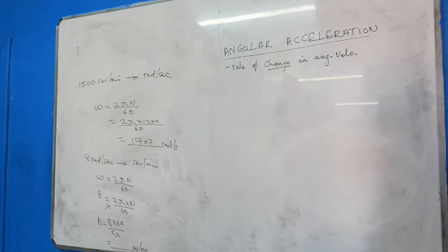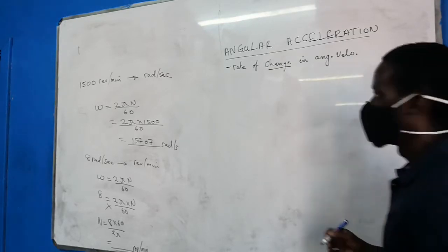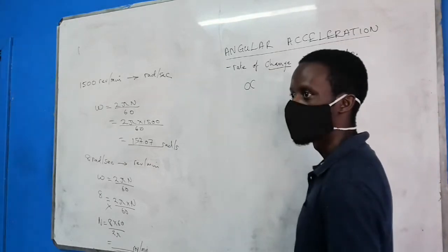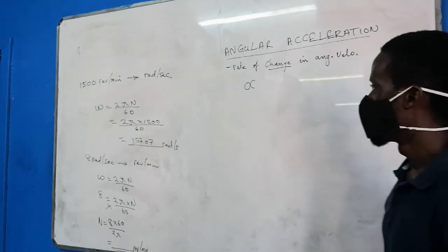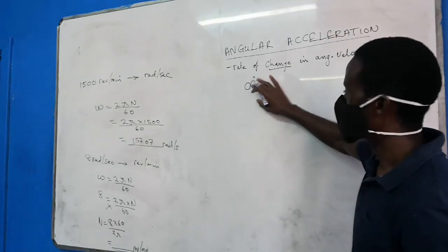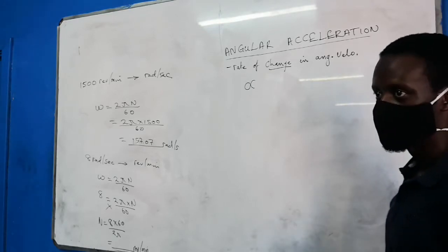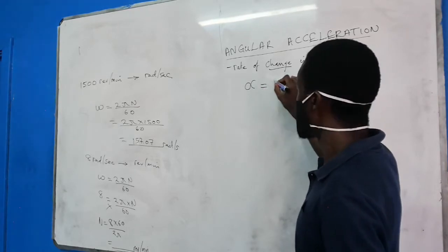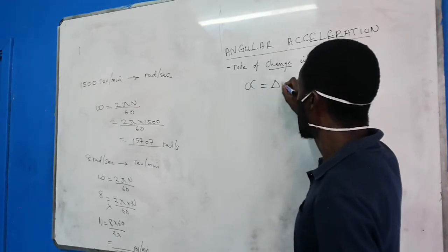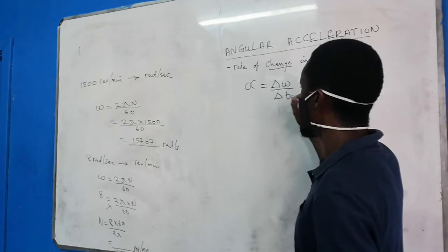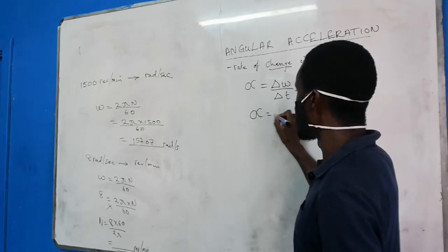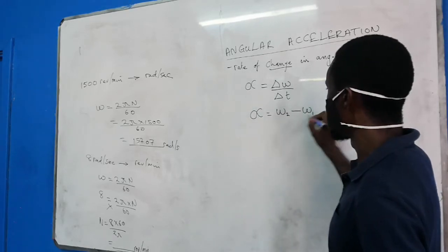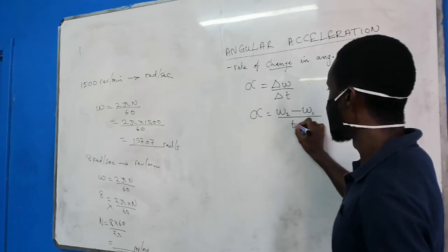When angular velocity is changing, angular acceleration will be represented by the symbol alpha. The Greek letter alpha is equal to change in angular velocity over change in time, which is your final angular velocity minus your initial angular velocity over time.